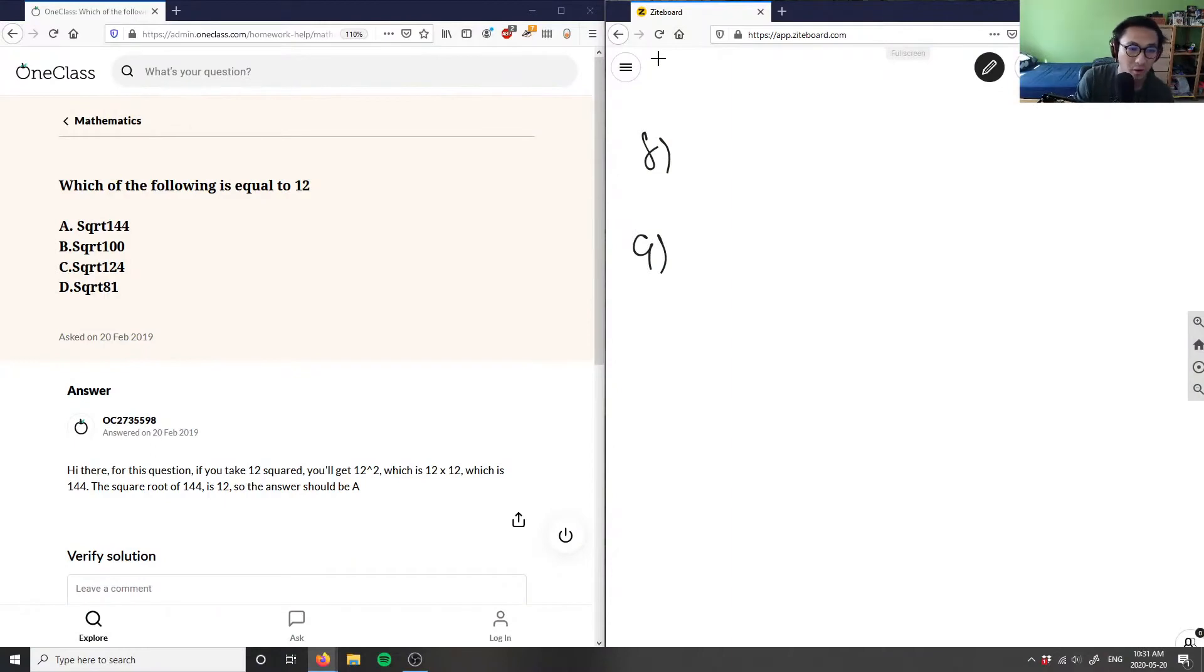Question 9 is asking us which of the following is equal to 12. So I have four options here. I have the square root of 144, the square root of 100, the square root of 124, and the square root of 81.